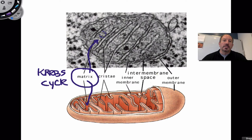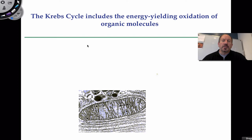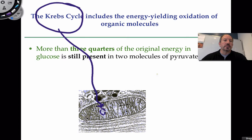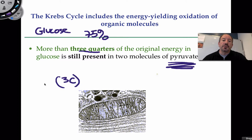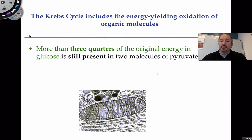The Krebs cycle is indeed a cycle happening inside the matrix. Basically, what it's doing is yielding energy from the oxidation of organic molecules. It should be mentioned that 75% of the energy that started off as glucose is still present in the two molecules of pyruvate. Pyruvate is a three-carbon molecule, and there are two of them. So 75% of the energy is still there, and the Krebs cycle is going to attempt to pull it out.